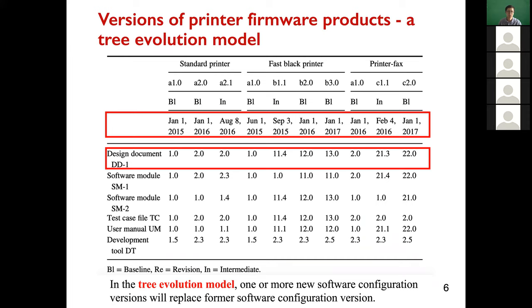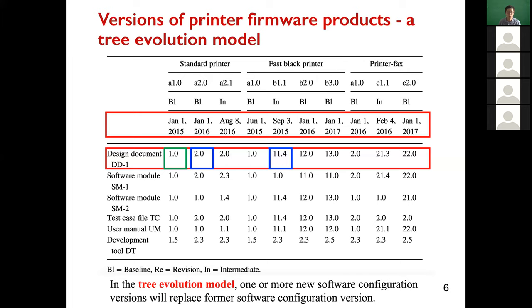Looking at a concrete example: the first row shows the timeline, the second row shows the version of one document. We see that first we have an initial version, but as time goes on we have two different versions derived from it. Version 2.0 and version 11.4 are both derived from 1.0, so it's not a linear model anymore — it's a tree-based evolution model, where more than one new version replaces the former version.